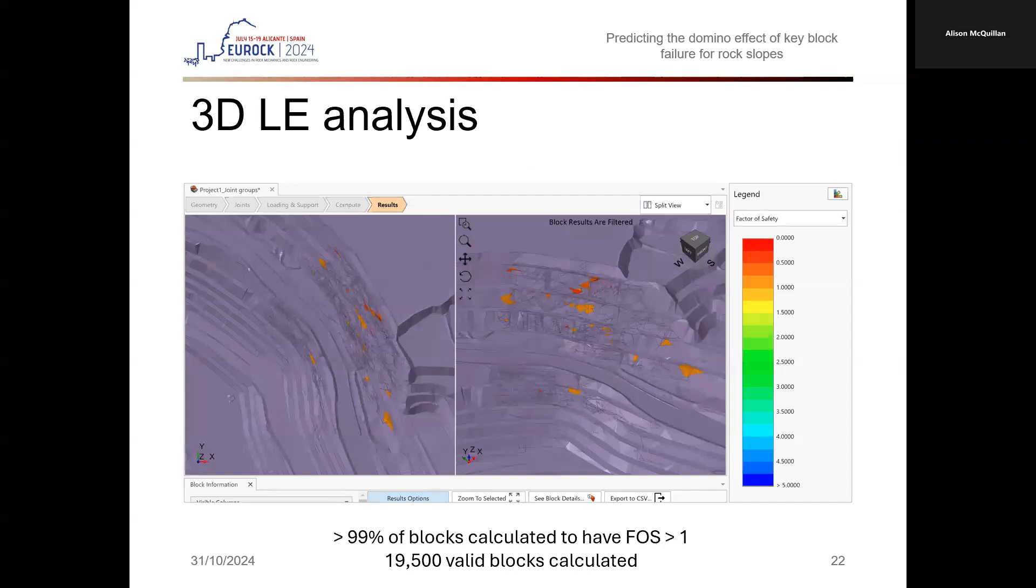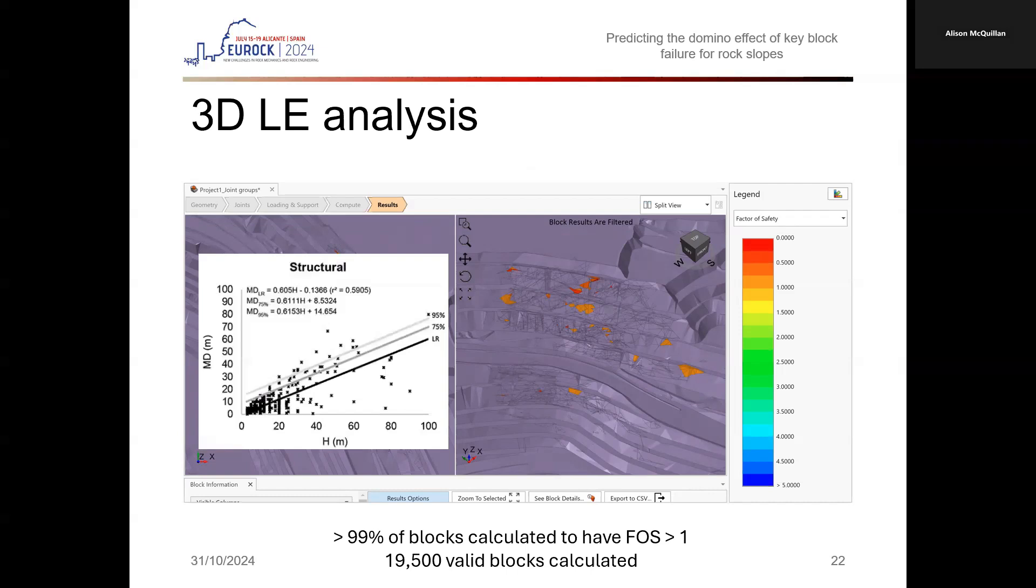The analysis indicated that over 99% of the blocks were calculated to have a factor of safety greater than 1, with over 19,500 valid blocks computed. The results of this analysis were used to predict the stability of the subsequent cutback assuming a similar fractured network would be realized. Similar to case 1, the volumes calculated from the valid blocks were used to estimate run-out distance to make an evaluation of bench width requirements and risk to operations.